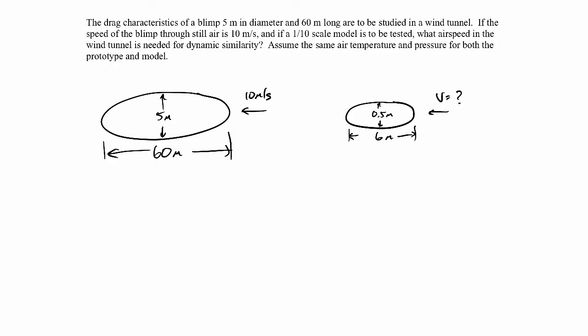So the prototype is this one over here, the full scale, and the model is the small one over here. So in order to have dynamic similarity, we want to make sure that the Reynolds numbers are the same between the two. That's the significant dimensionless parameter that'll be important here, because it's the ratio of inertial to viscous forces, which is really what's dominating here. So we want the Reynolds number in the prototype and the Reynolds number in the model to be the same.